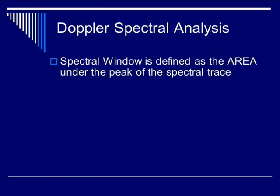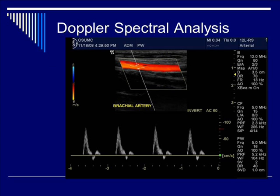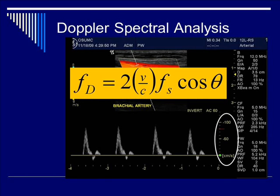The spectral window has a specific definition: it is the area under the peak of the spectral trace — the empty area seen in the display. On the y-axis you have velocity, which comes directly from the Doppler equation: f(d) equals two times velocity divided by the speed of sound, times the source frequency, times the Doppler angle term. This velocity v corresponds to the v plotted in the chart.